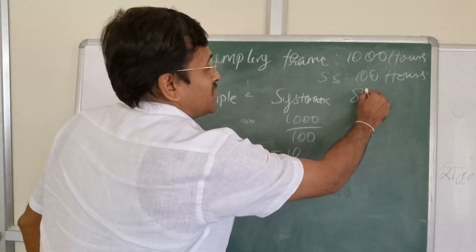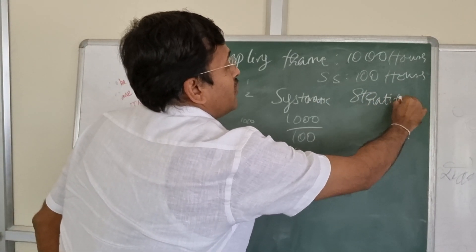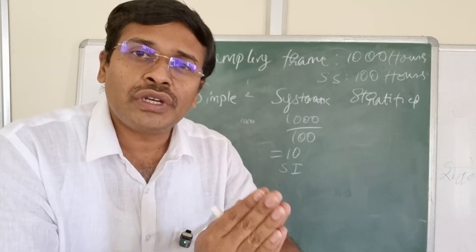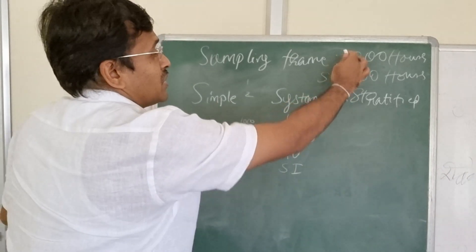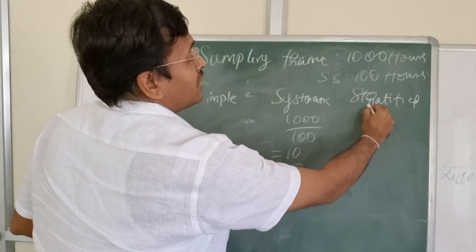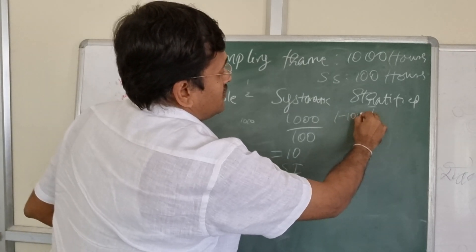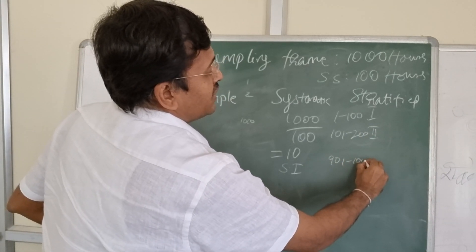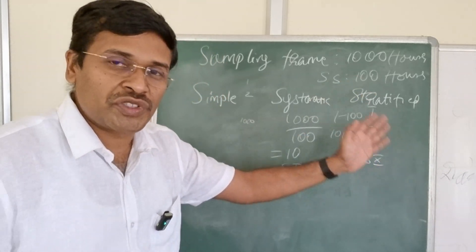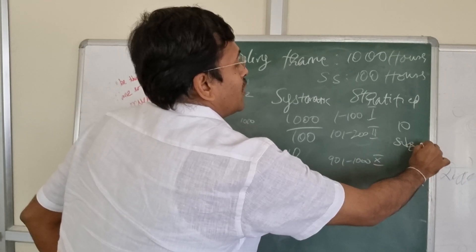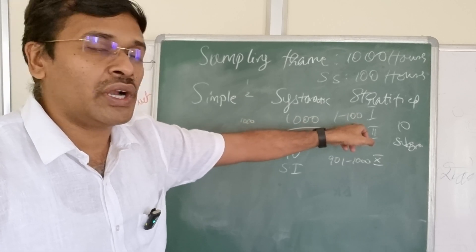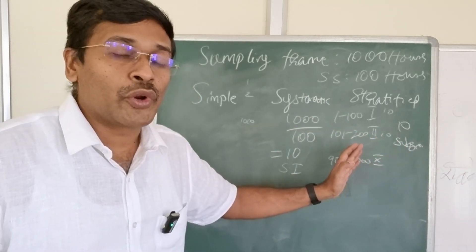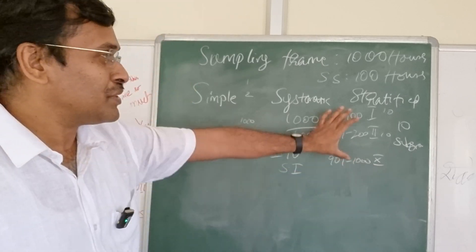The third one is stratified random sampling. In stratified random sampling, we divide the 1000 houses into 10 groups. For example, houses 1 to 100 form the first group, 101 to 200 the second group, and so on, with 901 to 1000 being the 10th group. We have 10 subgroups. From each of these 10 subgroups, we select 10 households — so from 1 to 100 we select 10, from 101 to 200 we select 10, and so on. In total we get 100. That is stratified random sampling.